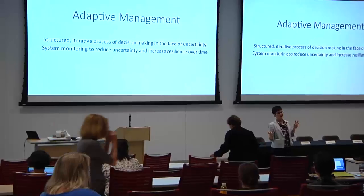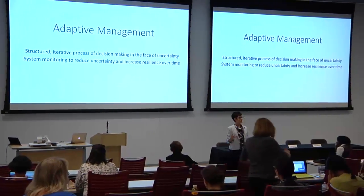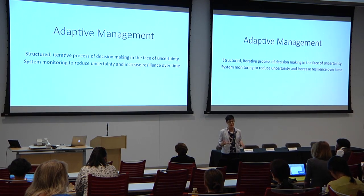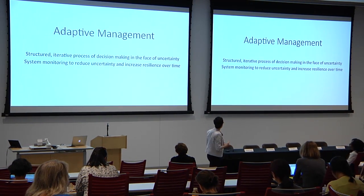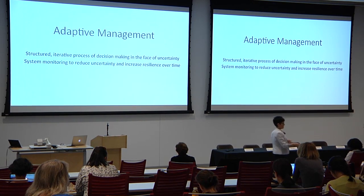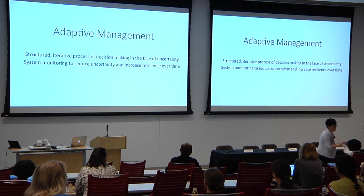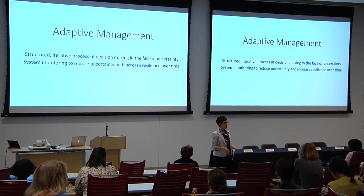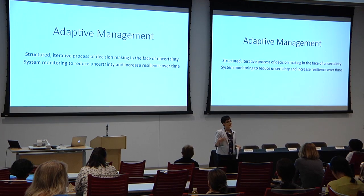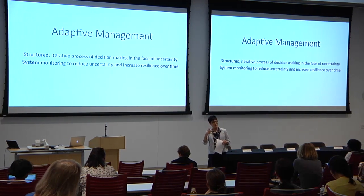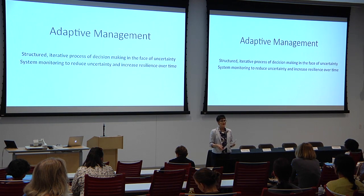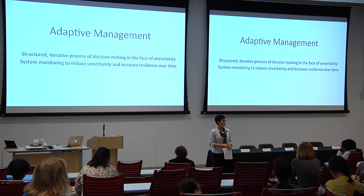One of the approaches promoted a lot in my field of natural resources for dealing with climate change adaptation is the idea of adaptive management. Adaptive management is a structured iterative process to support decision-making in the face of uncertainty, and it relies on monitoring the system so that you can see what's happening, and if you notice you've hit a certain point, then you change course a little. The idea is that system monitoring can reduce uncertainty and increase resilience over time.